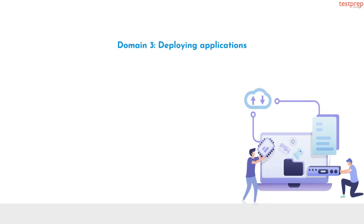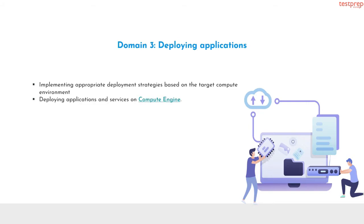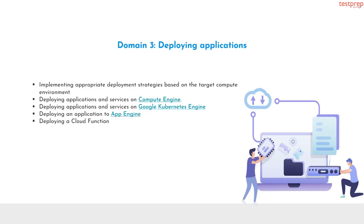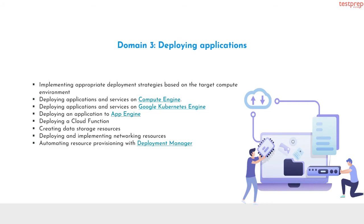Domain 3 is deploying applications. It contains nine subtopics: implementing appropriate deployment strategies based on the target compute environment; deploying applications and services on Compute Engine; deploying applications and services on Google Kubernetes Engine; deploying an application to App Engine; deploying a cloud function; creating data storage resources; deploying and implementing networking resources; automating resource provisioning with Deployment Manager; and managing service accounts.